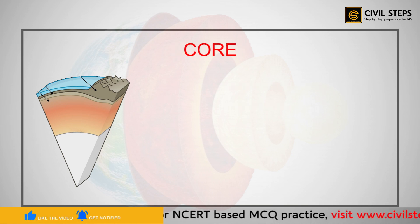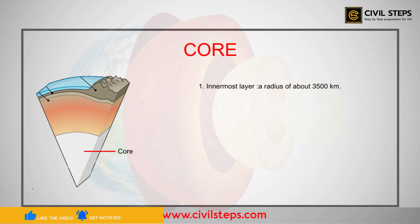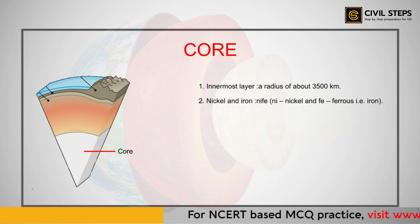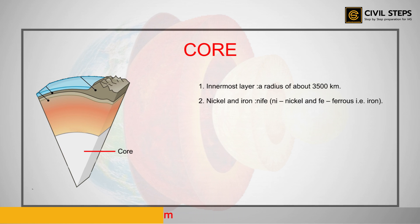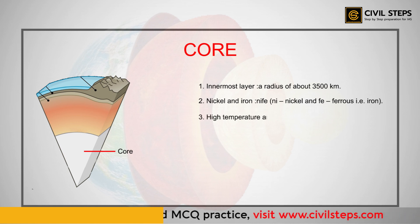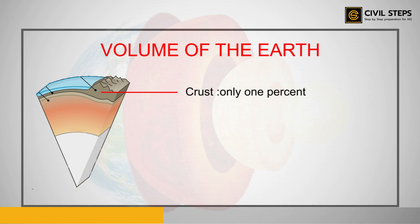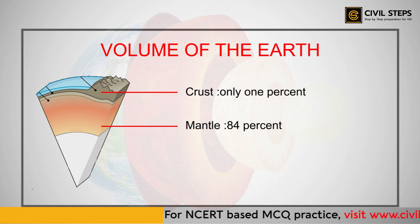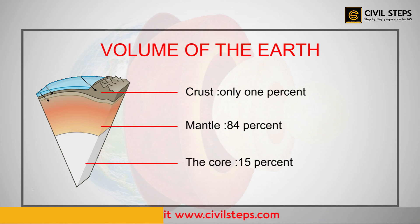The innermost layer of the Earth is the core, which has a radius of about 3500 kilometers. It is mainly made up of nickel and iron, and therefore it is called NIFE — 'NI' from nickel and 'FE' from ferrous, meaning iron. The central core has very high temperature and pressure. The crust forms only one percent of the volume of the Earth, 84 percent consists of the mantle, and the core makes up 15 percent.